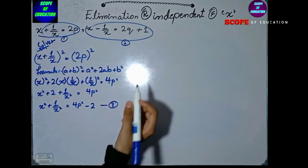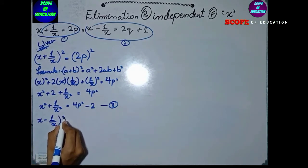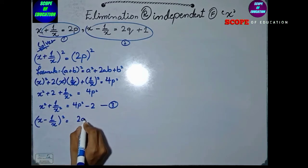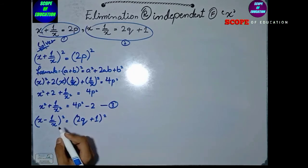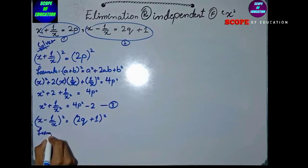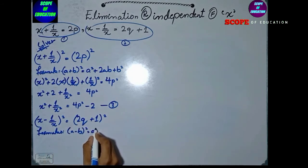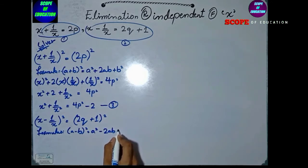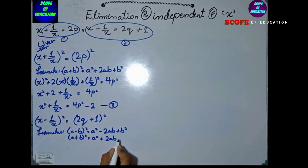This is our equation 3. Now taking equation 2 and squaring on both sides. Here we have two formulae: a minus b square and a plus b square. a minus b square is equal to a square minus 2ab plus b square, and a plus b square is equal to a square plus 2ab plus b square. Now we have the formulae ready.